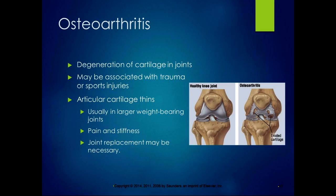Osteoarthritis is an effect of aging — it's degeneration of the cartilage in the joints, and may be associated with trauma or sports injuries. The articular cartilage thins, usually in the larger weight-bearing joints like hips and knees, and sometimes ankles and shoulders. It causes pain and stiffness, and sometimes people need joint replacements. Hip and knee replacements are now the most common surgery in the United States, and in physical therapy, no matter what setting you work in, you will work with people who have osteoarthritis and joint replacements.